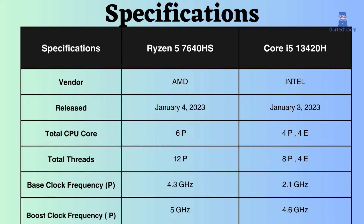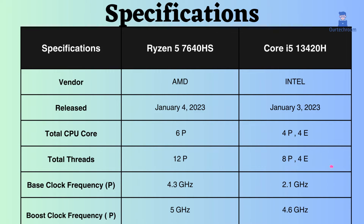The AMD Ryzen 5 7640HS features 6 performance cores and 12 performance threads, while the Intel Core i5-13420H utilizes a hybrid architecture with 4 performance cores, 4 efficiency cores, 8 performance threads, and 4 efficiency threads. The base and boost clock frequency of the performance core in AMD Ryzen surpasses that of Intel. Consequently, the AMD Ryzen outperforms Intel when the CPU is under normal or high load.